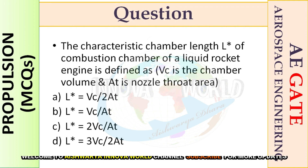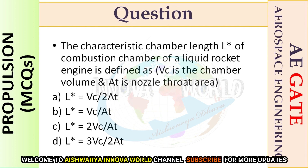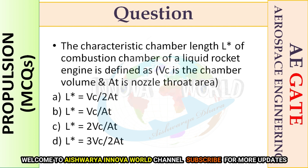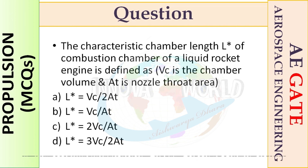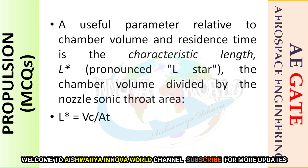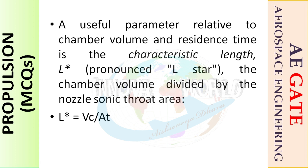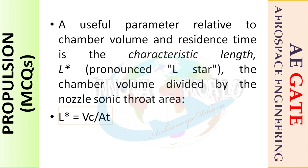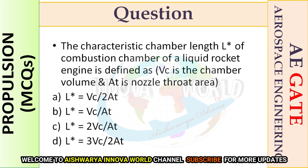Next: the characteristic chamber length L* of the combustion chamber of a liquid rocket engine is defined as — where VC is the chamber volume and AT is the nozzle throat area. Recalling the definition, L* can be written as VC divided by AT. So the right answer is option B.